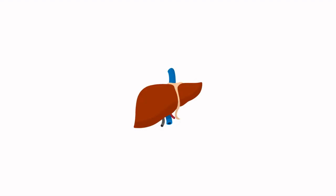These absorbed nutrients are first taken to the liver via the hepatic vein for processing and filtering. Once detoxified, they are passed back into the blood, which transports the nutrients to every cell in the body.